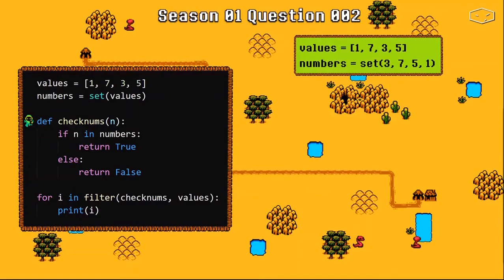Then Python loads the check numbers function and it goes to the for each loop. And here we must pay attention to the filter function. This function receives two parameters. The first parameter is the condition that it will use to filter and the second parameter is the collection that will be filtered.